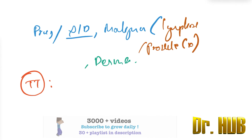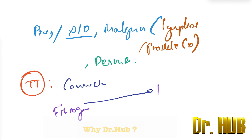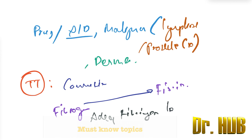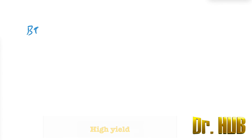Next we look at TT, which stands for Thrombin Time. It is used for testing the conversion of fibrinogen to fibrin, and it depends on adequate fibrinogen levels.